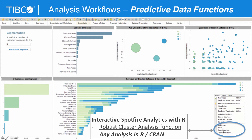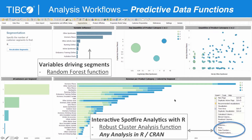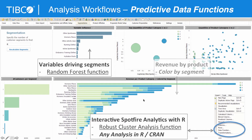From the menu, you can insert a data function comprising a set of R code. In this case, doing a robust cluster analysis where you map the columns of your Spotfire data to the inputs of the R function. This particular dashboard also does a random forest analysis to identify the variables influencing the cluster breakdown. Here we're coloring product revenue by segment — you can see women's fleece representing the biggest amount of revenue and where it's coming from across different segments.